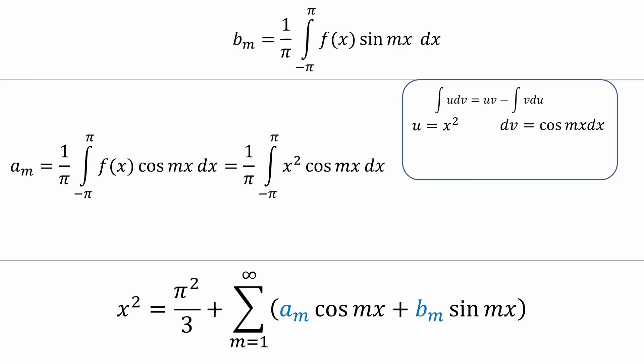So du will be the derivative of u, or 2x dx, and v will be the antiderivative of dv, which is 1 over m times sine mx. Now we can substitute these values into the integration by parts formula to get the following expression. The first term is the uv term and the second is the integral vdu term.